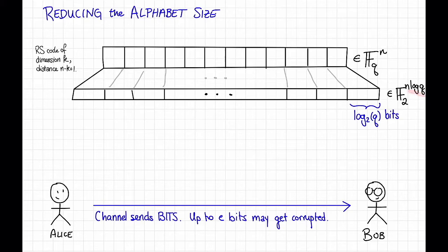So this gives us a bit string of length n log q. In general, in these videos, whenever I don't write the base of the log, I mean log base 2. Okay, so this seems like a reasonable thing to do, but how well does this do? If we treat this as a binary code, what are its parameters?